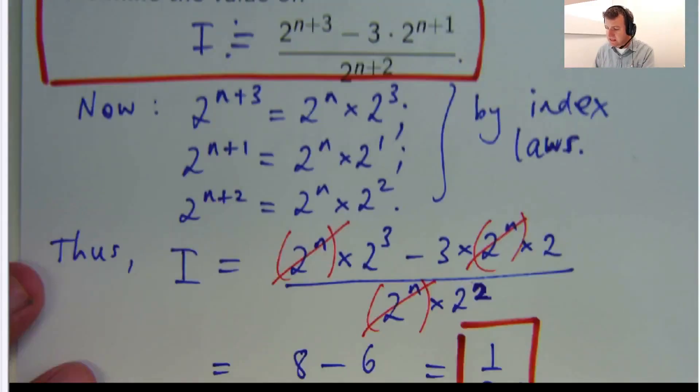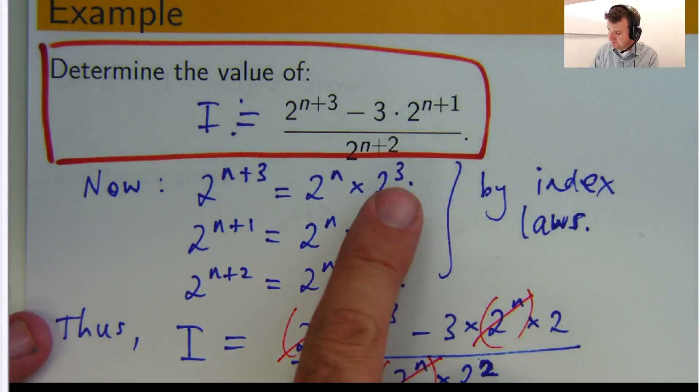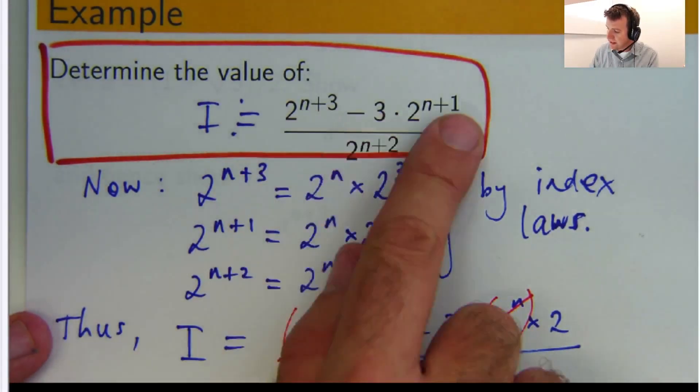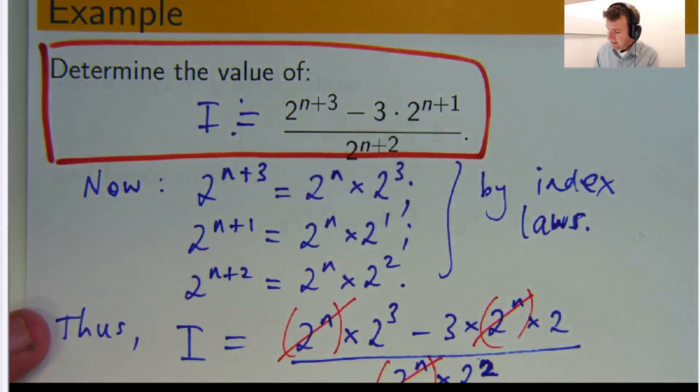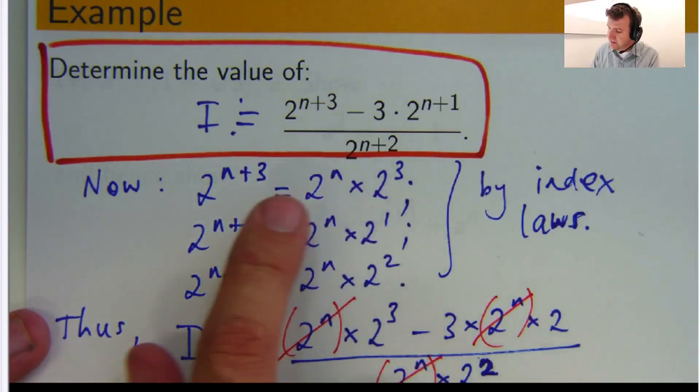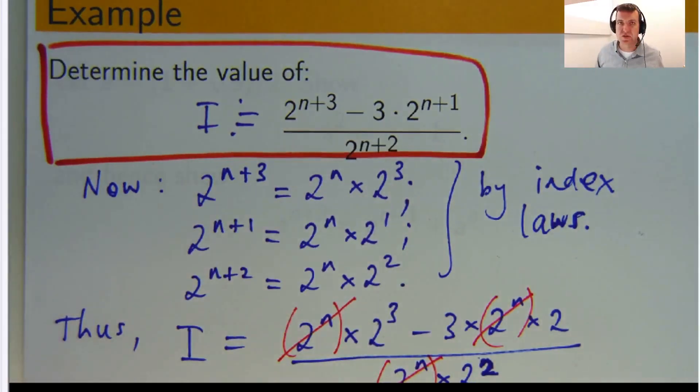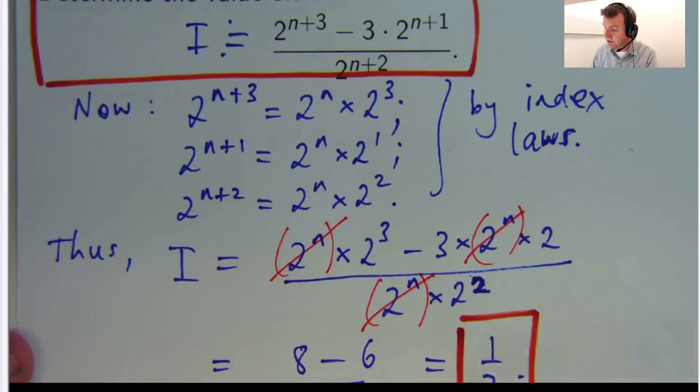Okay, so this is not the only way that you can solve this problem. You could make it so each factor is 2 to the n plus 1. So instead of breaking this down to 2 to the n times 2 to the 3, it could be 2 to the n plus 1 times 2 squared.